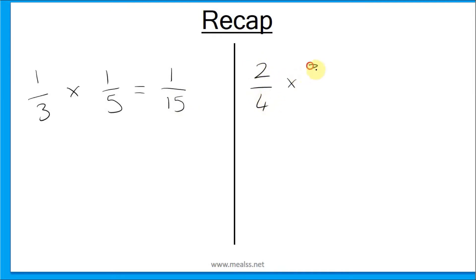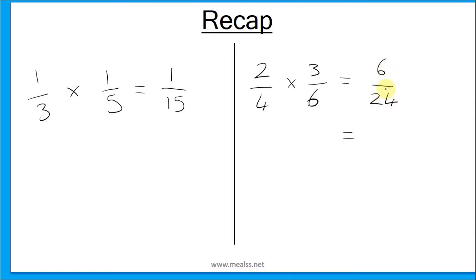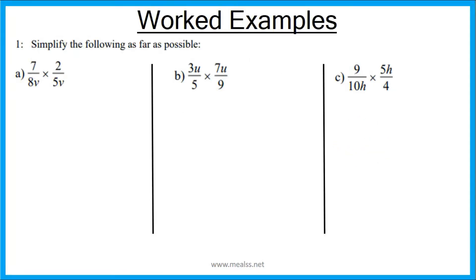Another example: 2 over 4 multiplied by 3 over 6. This gives us 2 times 3 is 6, and 4 times 6 is 24. This can then be simplified — 6 and 24 both have a common factor of 6 — giving us 1 over 4. Now let's have a go at multiplying fractions with algebra.